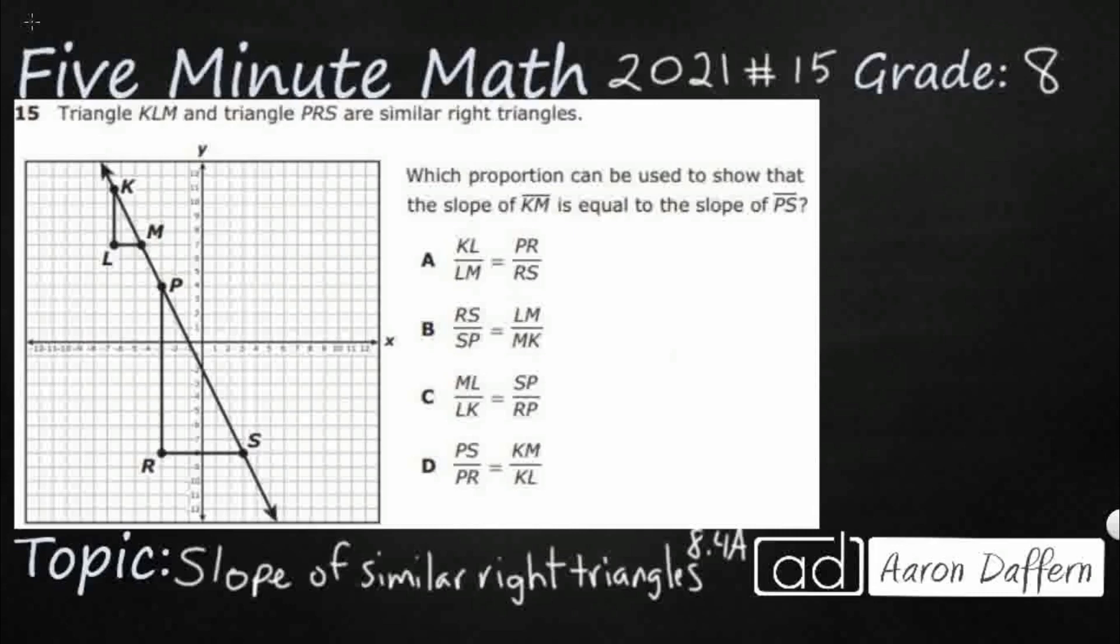Hello and welcome to 5-Minute Math. Today we are looking at the 8th grade concept of slope of similar right triangles. This is standard 8.4a in the great state of Texas and we are using item number 15 off the 2021 released star test.